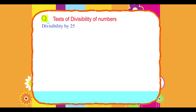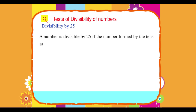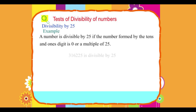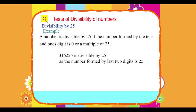Divisibility by 25: A number is divisible by 25 if the number formed by the tens and ones digits is 0 or a multiple of 25. Example: 316225 is divisible by 25 as the number formed by the last two digits is 25.